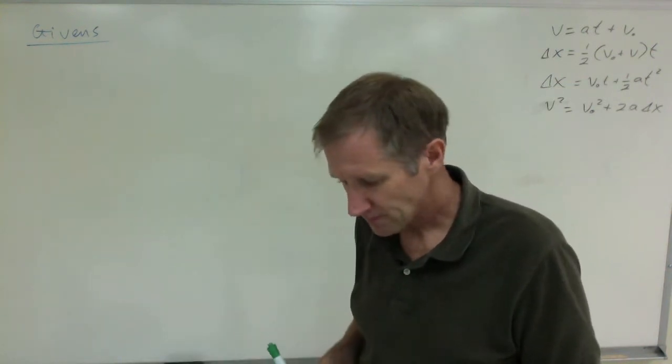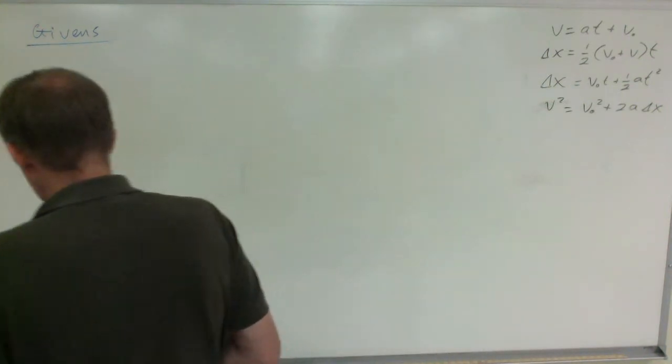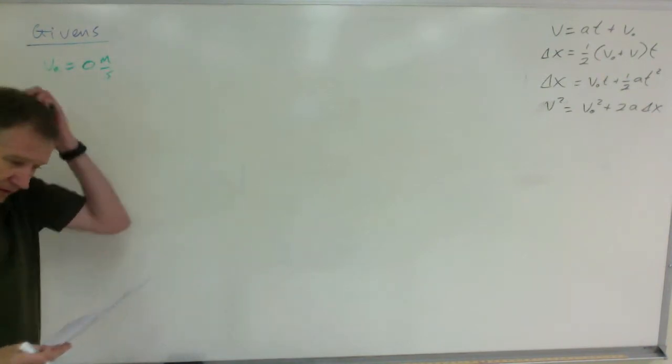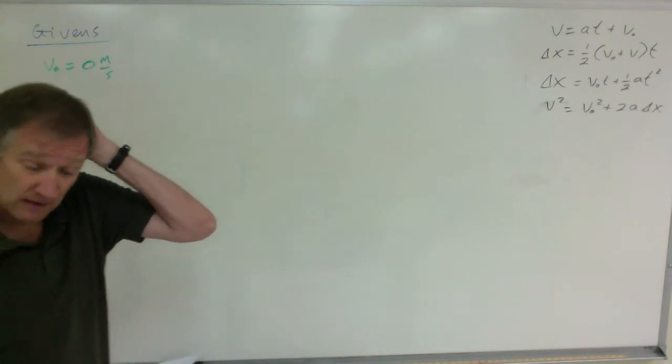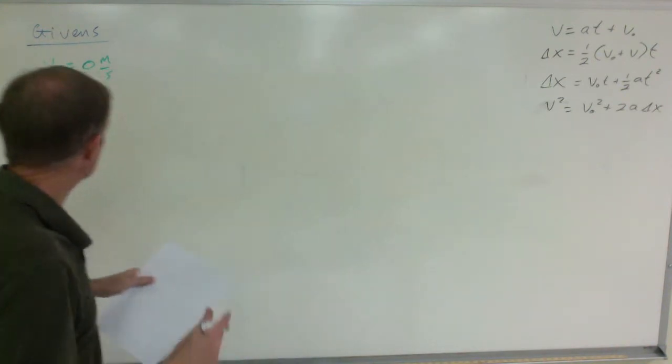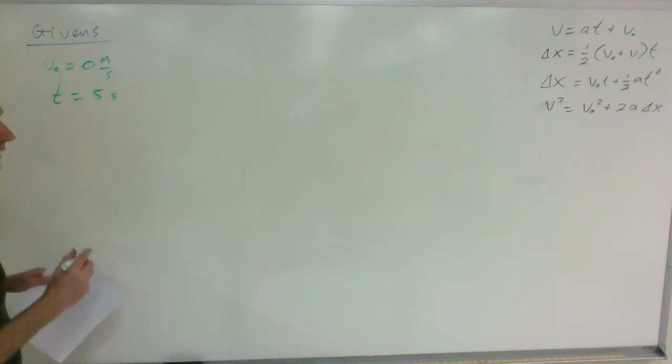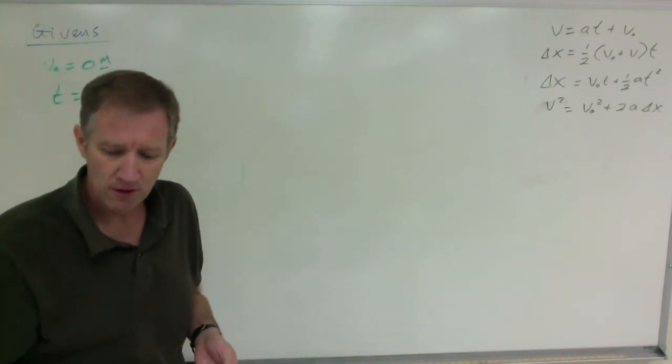This object is dropped, released from rest, so the initial velocity is zero. The only number given is five seconds, so it takes five seconds to fall. But you know that if it's in free fall near the surface of the earth, we get to use negative 9.8 meters per second squared as the acceleration.